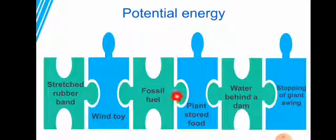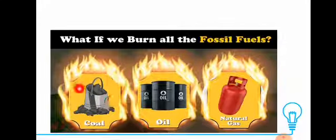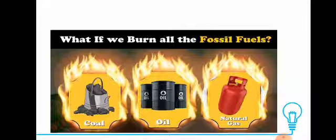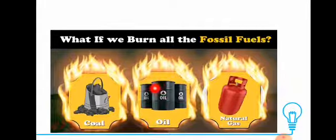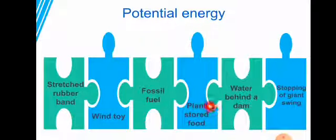The third example is fossil fuels — coal, oil, and natural gas. All of these are storing energy right now. You are not using them at this moment, so the energy is stored inside them. Each one has potential energy. The fourth example is plant-stored food.